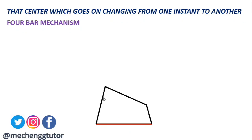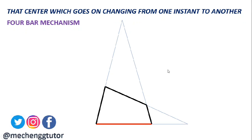We draw extension lines from link number 2 and link number 4, and similarly two extension lines from link number 3 and link number 1. The intersections of these four lines at their respective points give the instantaneous centers.